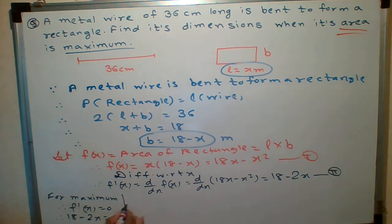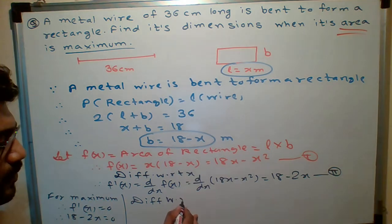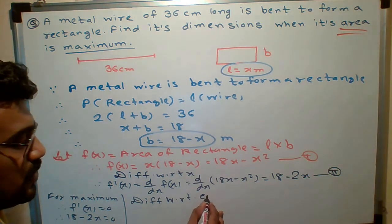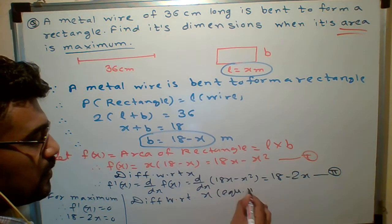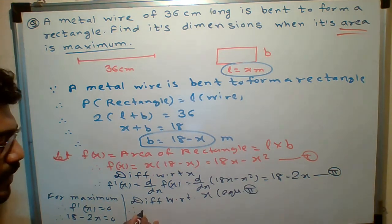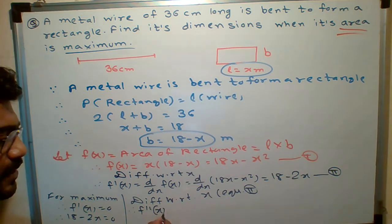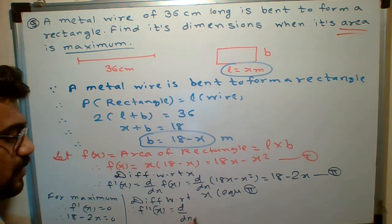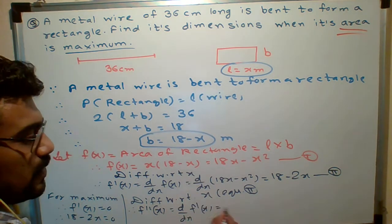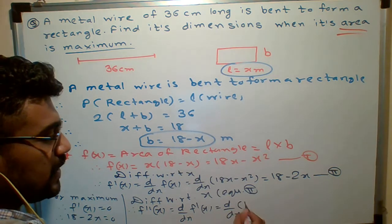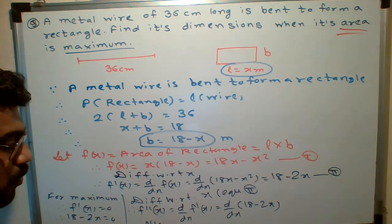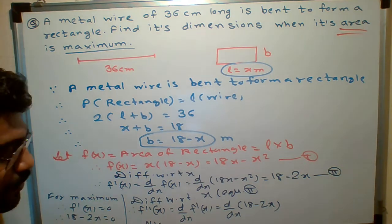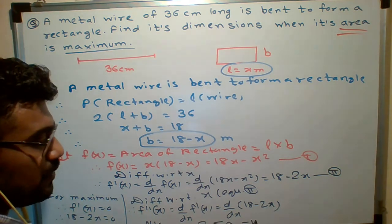What I will do here? I will again differentiate. Which equation? Equation 2. Differentiate equation 2 with respect to x. What do we get? F double dash of x, which is d upon dx of f prime of x. So, d upon dx of, what is the derivative of 18 minus 2x? How much is this? F double dash of x. Minus 2.